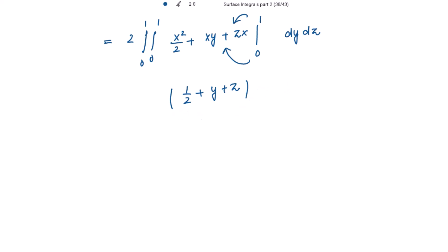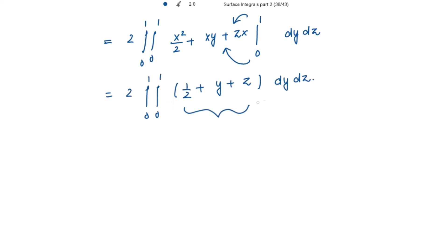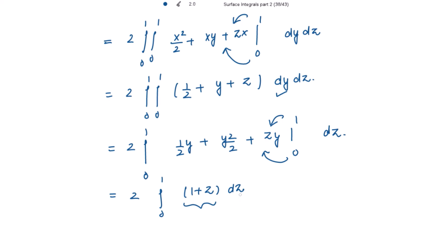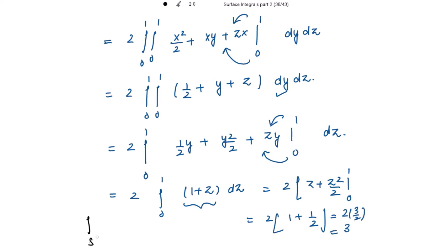So the integrand is 1/2 plus y plus z. Integrating with respect to y, we get (1/2)y plus y²/2 plus zy, with limits 0 to 1. Putting the upper limit gives 1/2 plus 1/2 plus z, which is 1 plus z. Integrating with respect to z gives z plus z²/2, with limits 0 to 1, giving 1 plus 1/2. So we get 2 times 3/2, which equals 3. Marking this as star.